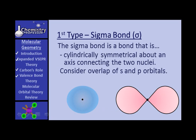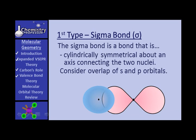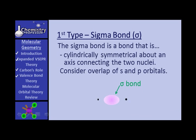Now suppose you have overlap of an S and a P. They collide and overlap, and you can see where the overlap is occurring. That volume in there is a sigma bond — the rest of it goes away. So when it forms this sigma bond, you see that it is on an axis connecting the two nuclei.